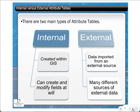There are two main kinds of attribute tables. An internal table is created within ArcGIS — you can edit and modify it directly without needing another spreadsheet or database program. For an external table, you get data from an outside source. For example, for a parcel map of Baltimore, rather than typing all owner information into ArcGIS, you would get that data from the property office as an external table and then bring it into ArcGIS.